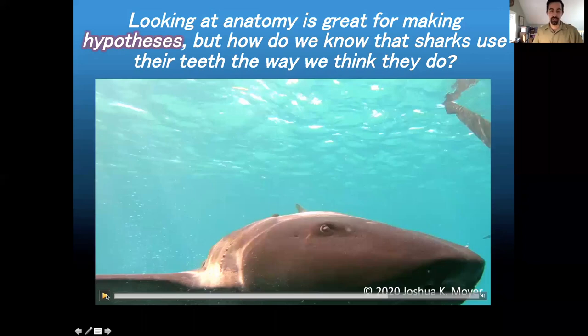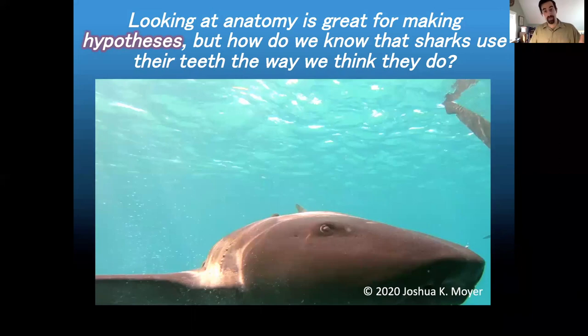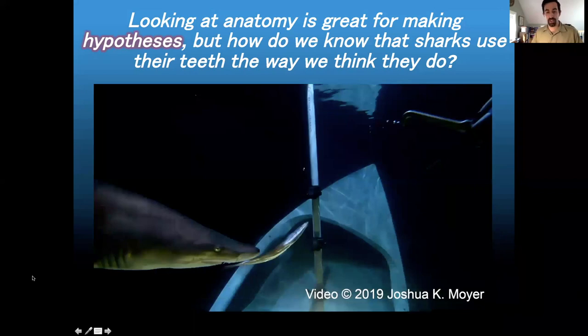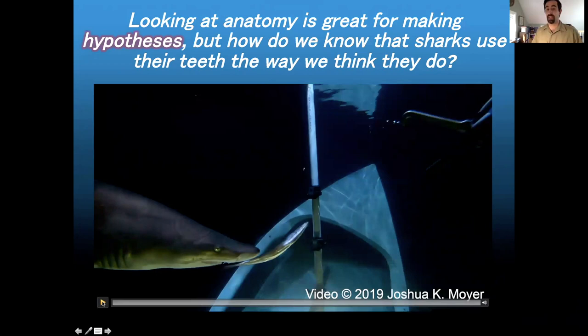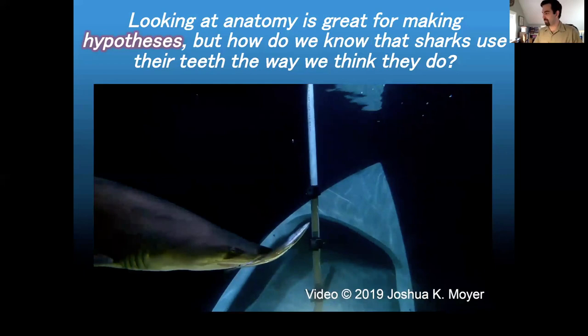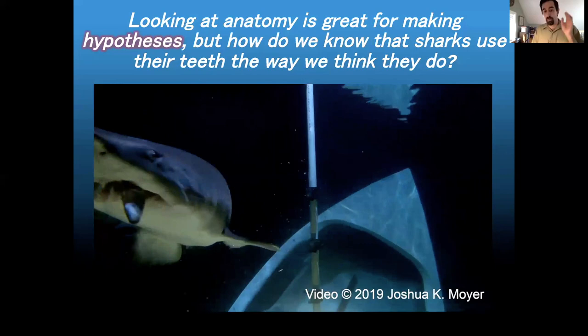Nurse sharks are a wonderful species. The next shark is a sand tiger shark — you've already seen one of their teeth. Watch this: it's fast. Here comes the sand tiger shark — boom, really fast. Now watch in slow motion. Do you see how the shark not only opens its mouth, it actually throws its jaws forward? Lots of different modern sharks do that.